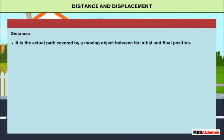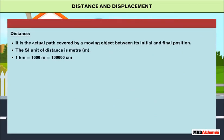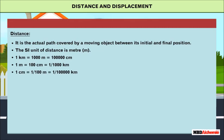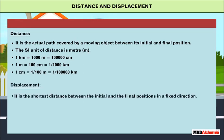Distance is the actual path covered by a moving object between its initial and final positions. The SI unit of distance is the meter (m). One kilometer equals 1000 meters, equals one lakh centimeters. One meter equals 100 centimeters, equals one-thousandth of a kilometer. One centimeter equals one-hundredth of a meter.